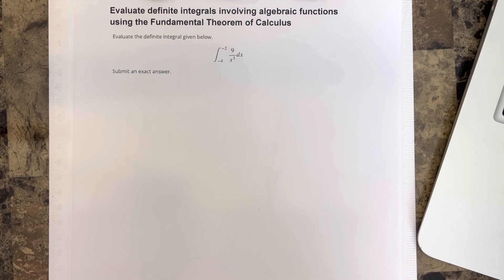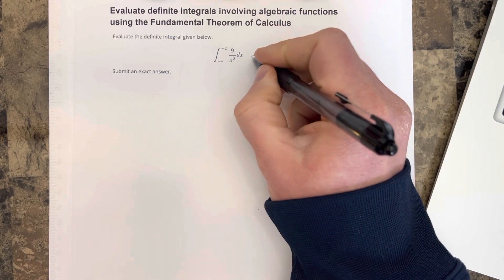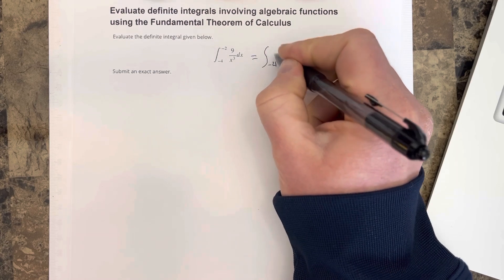We have the integral from negative 4 to negative 2 of 9x cubed dx. I'm going to write that as the integral from negative 4 to negative 2,